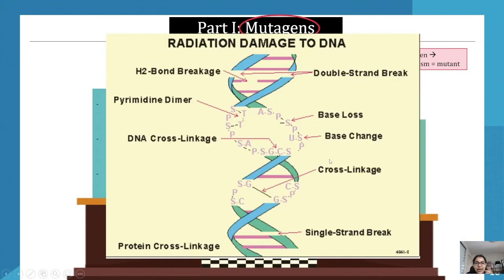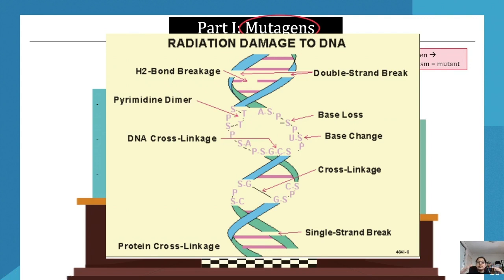Here are our pyrimidine dimers — what happens to DNA as a result of radiation. There can be hydrogen bond breakage: by now we know that the bases have hydrogen bonds holding them together, and radiation can break those. There can also be pyrimidine dimers, where the bases turn inwards to connect to one another instead of connecting straight across. There can also be a loss of bases, base changes, cross-linkage, single strand breaks, and protein cross-linkage. The key ones to know are pyrimidine dimers and hydrogen bond breakage, as they have a huge role in changing the structure of DNA.